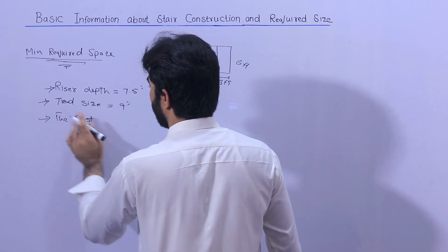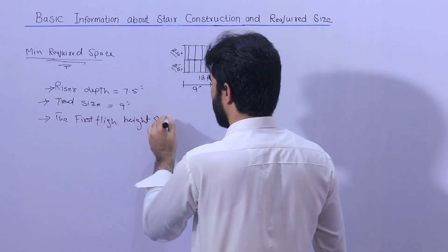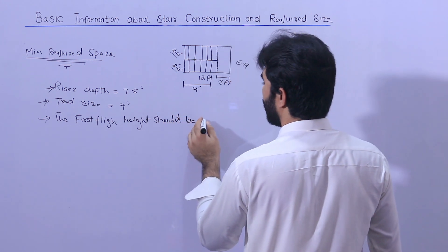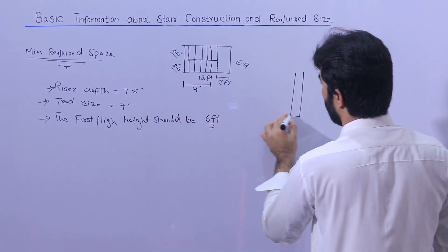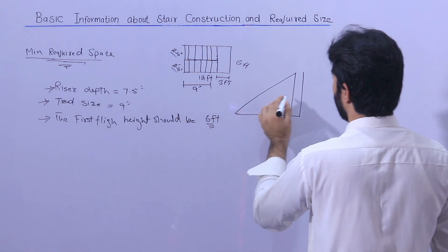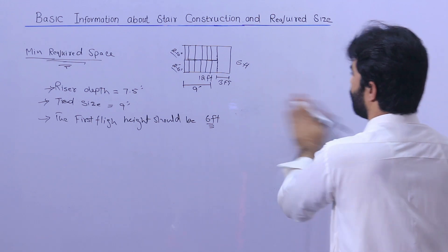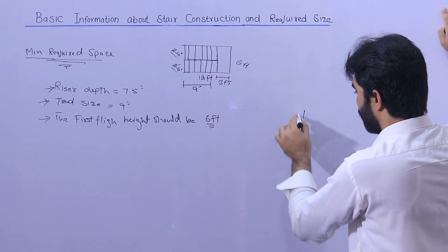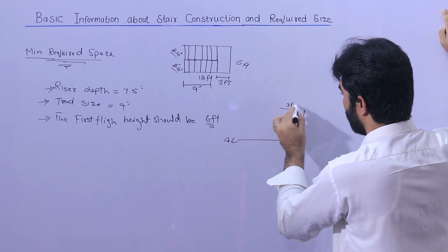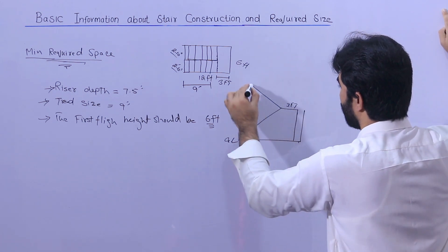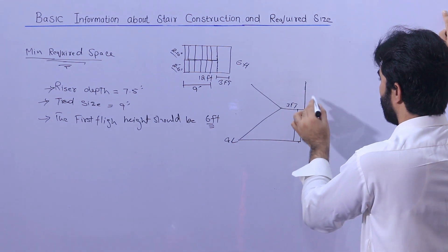For the flight heights: the first flight height should be 6 feet. As you can see, this is the wall, here is the ground level, and here is the landing which is about 3 feet. You come down to the landing and then go upward. The first flight is 6 feet, and if the floor-to-floor height is 11 feet, the second flight becomes 5 feet.